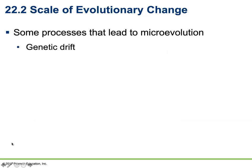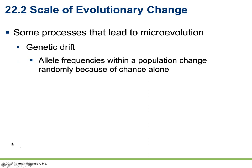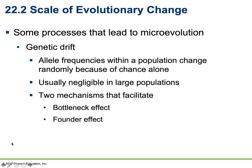There are several processes that can lead to the accumulation of small changes that ultimately drive microevolution, including genetic drift, gene flow, and natural selection. Genetic drift occurs when allele frequencies within a population change randomly by chance alone. This generally has a negligible effect on large populations, but small populations can experience a very dramatic effect. In the case of a bottleneck effect, the population experiences a dramatic reduction in size, leading to the exclusion or inclusion of certain alleles in the remaining population.